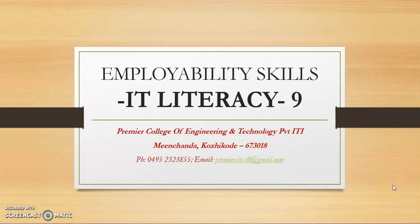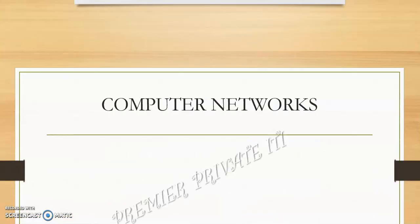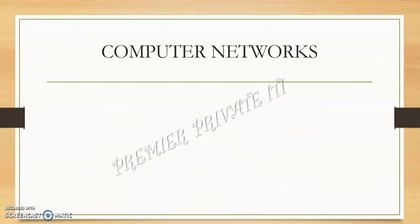Employability Skills, IT Literacy Part 9. We are going to learn about Computer Networks. A computer consists of hardware and software. The software includes system software and application software. We are going to learn about specific application software, including Microsoft Word and Excel.